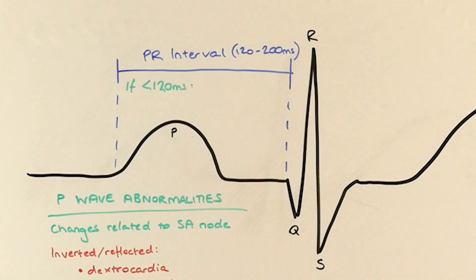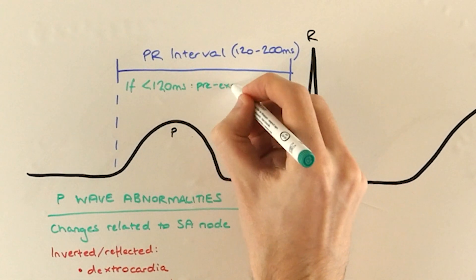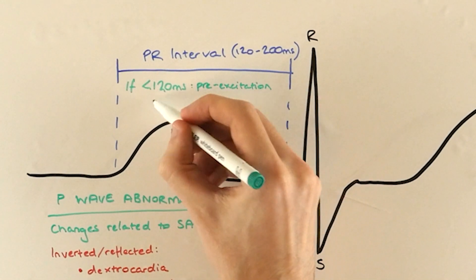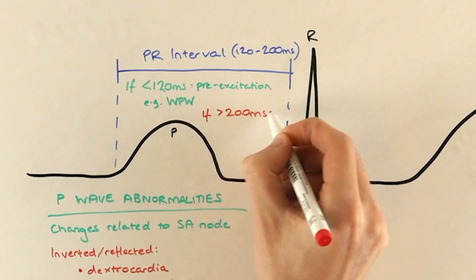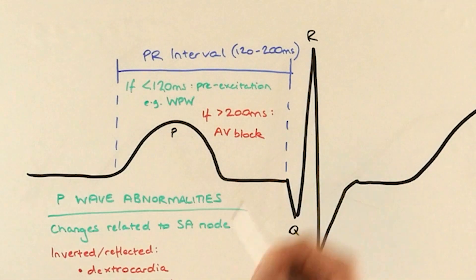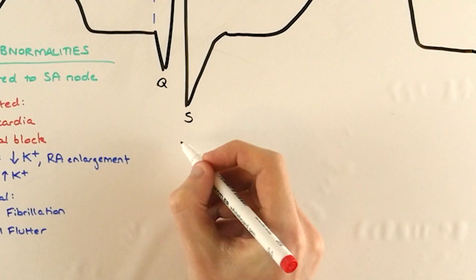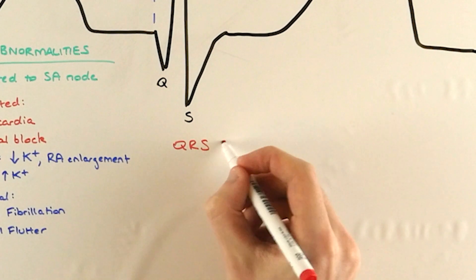This is most commonly something called Wolff-Parkinson-White syndrome. If it's longer than 200 milliseconds, we need to be thinking about atrioventricular block, a problem with the normal conduction pathway between the atria and the ventricles. Now we're at ventricular contraction, the QRS complex.